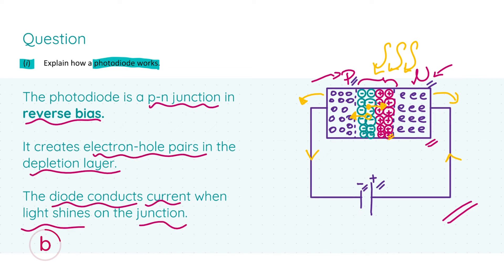You get three marks for stating the p-n junction is in reverse bias, two marks for saying it creates electron-hole pairs in the depletion layer, and your final two marks for stating the diode conducts current when light shines on the junction.